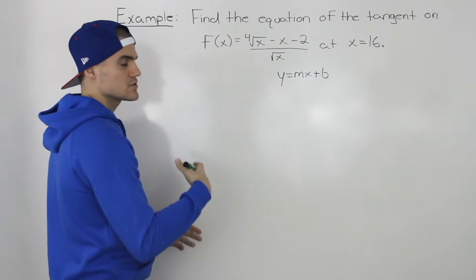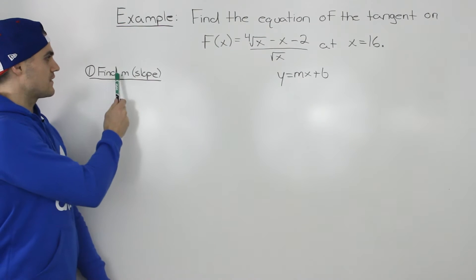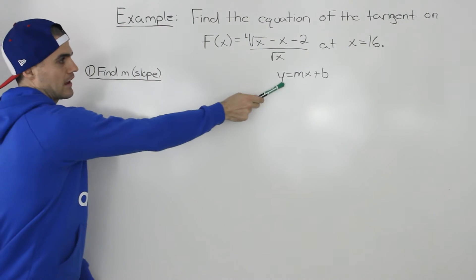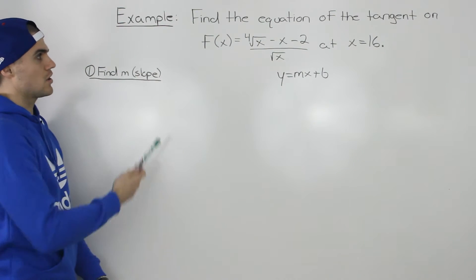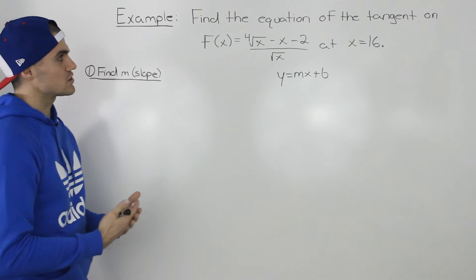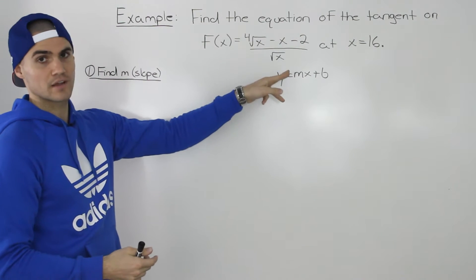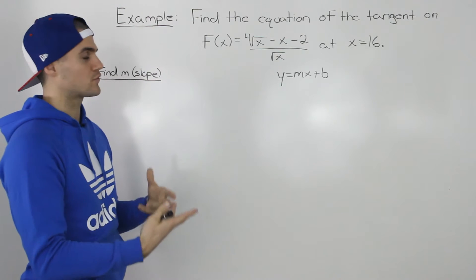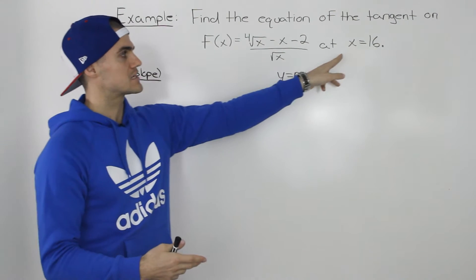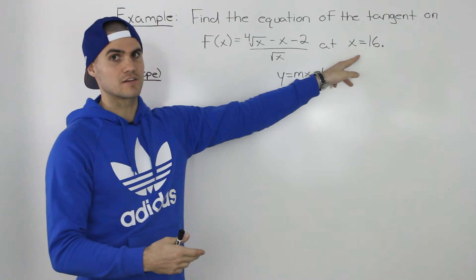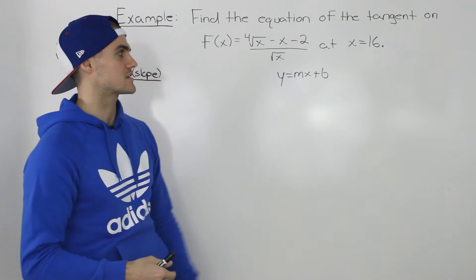Let's do this in a couple of steps. The first step is to find the m value in the linear equation, which is the slope. To find the slope of the tangent at a specific x value, we first have to find the derivative of the function, and then we can plug in the specific x value of 16 to get the slope of the tangent.